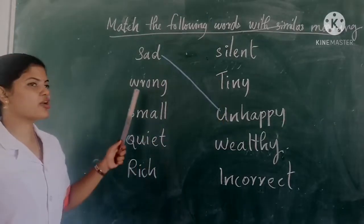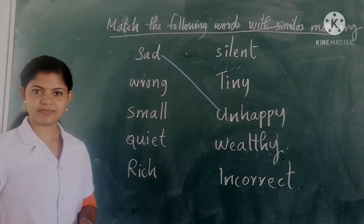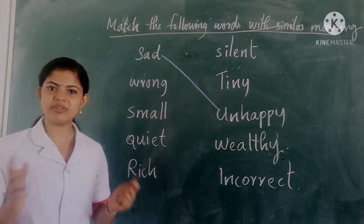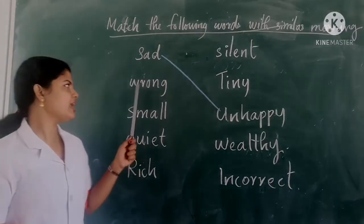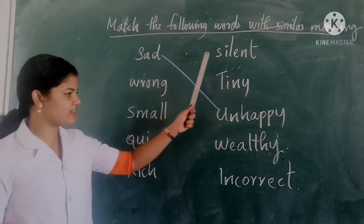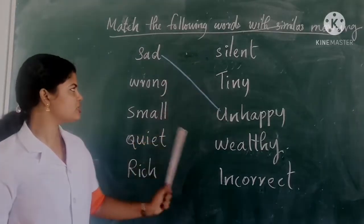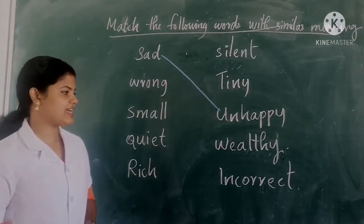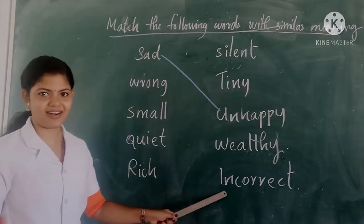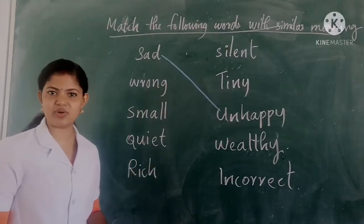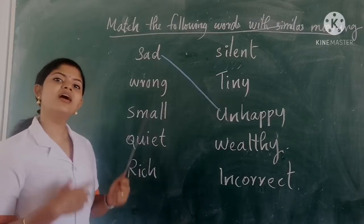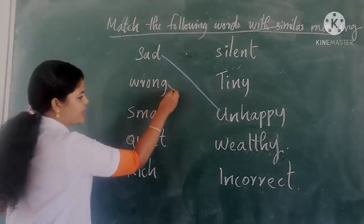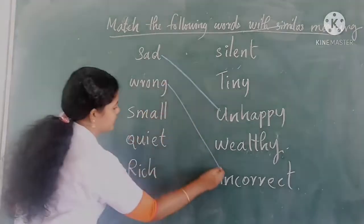Next one: wrong. Wrong means something is not right. Is there any other word related to the word wrong? Yes, incorrect. Incorrect is also meant wrong. So we can match them together.